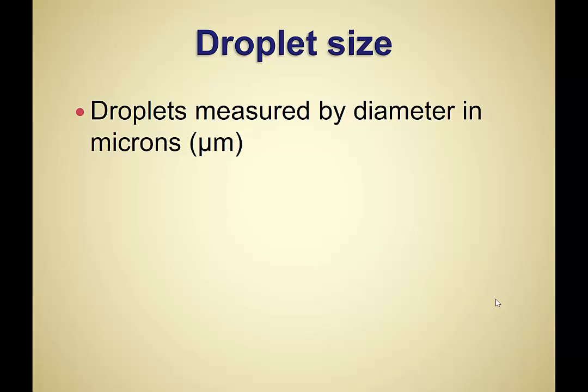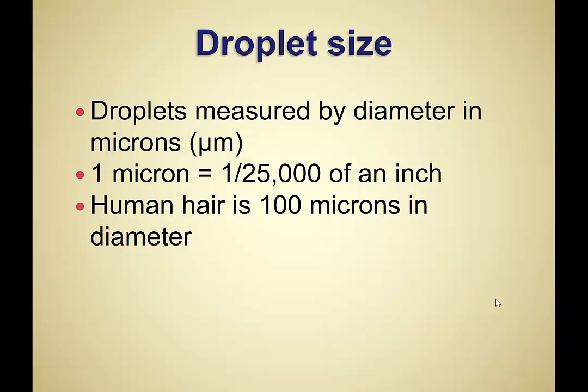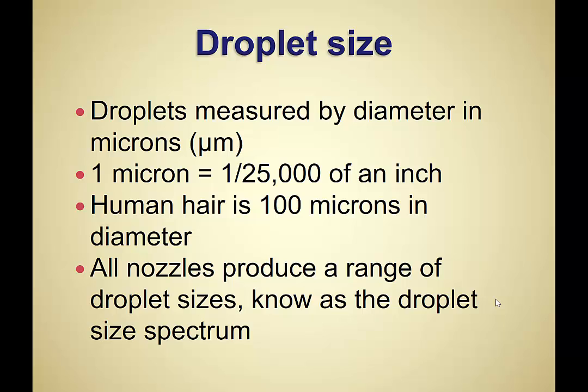We measure spray droplets by their diameter — the distance from one side to the other. The unit of measurement is a micron: one micron equals 1/25,000th of an inch. The way I remember it: the human hair is 100 microns in diameter. Keep that number in mind as a reference point when I bring up different graphs showing different droplet sizes.